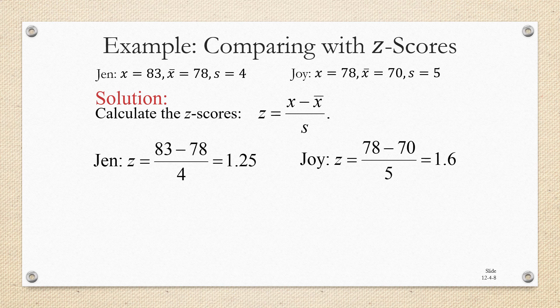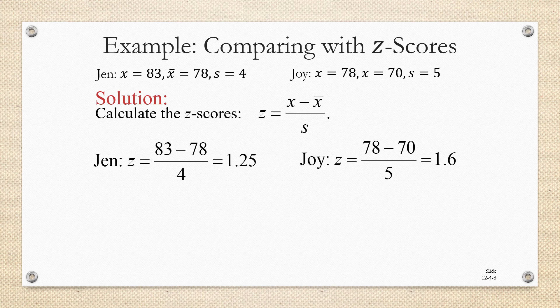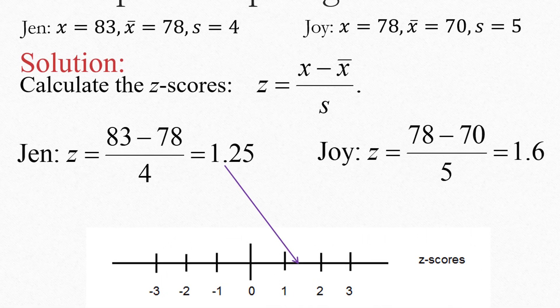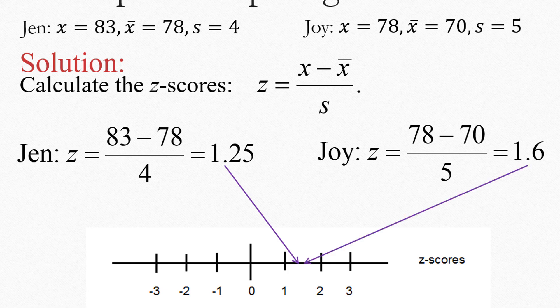So what does this tell us about how well Jen and Joy did relative to each other? Well, by the Z scores, we can tell how their score compares to the other students in their own class. So Jen was 1.25 standard deviations above the average score in her class. Not bad. Joy, though, was 1.6 standard deviations above the average score in her class. So she appears to have done a little bit better relative to her classmates.